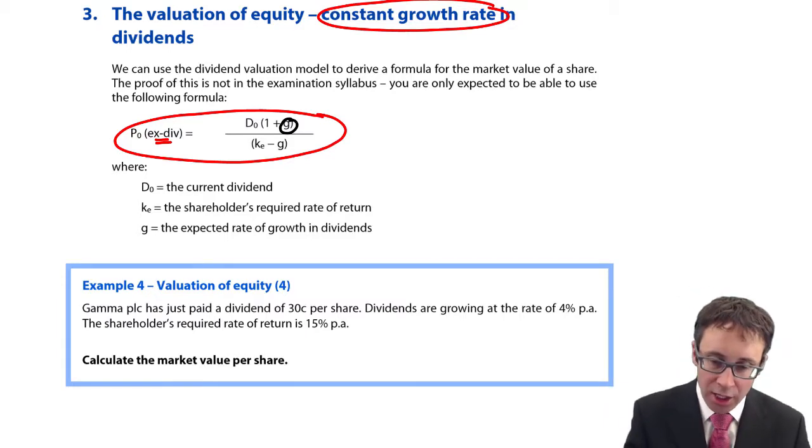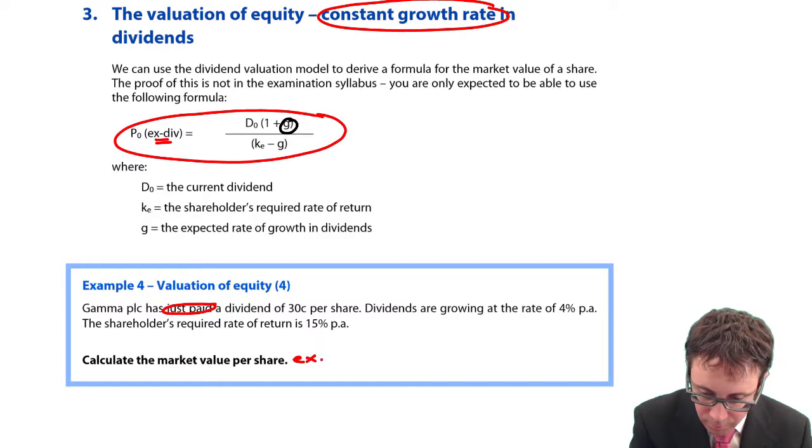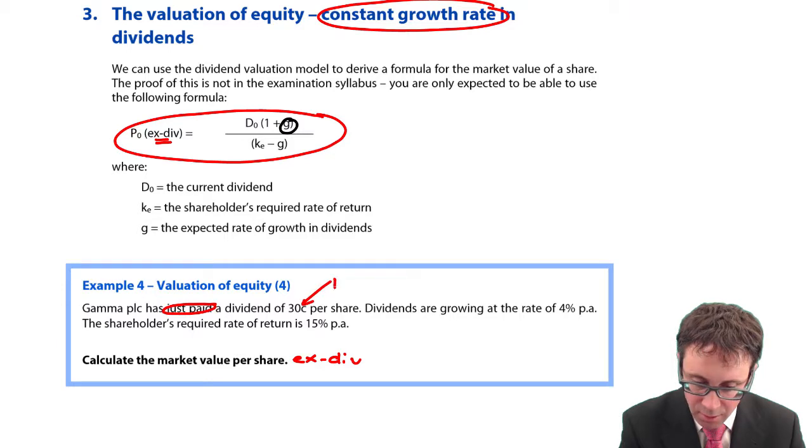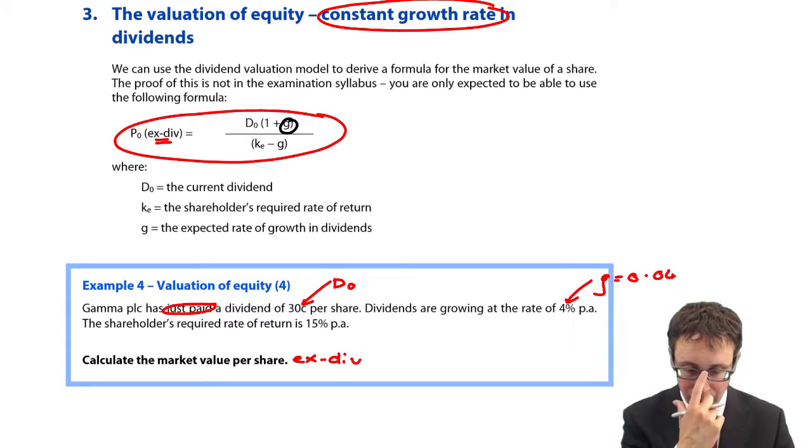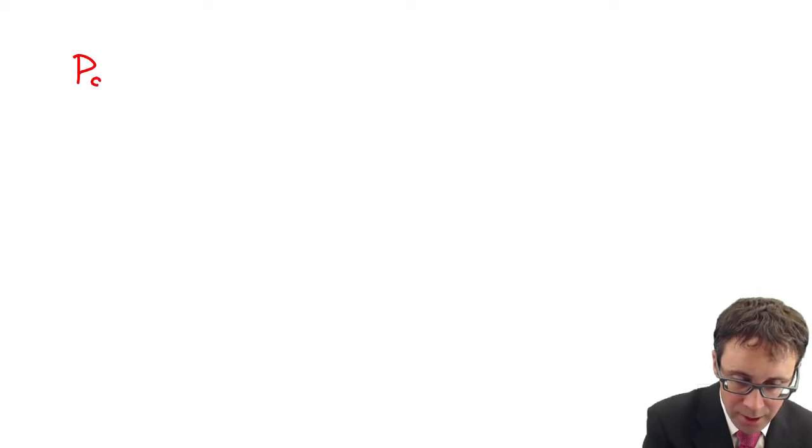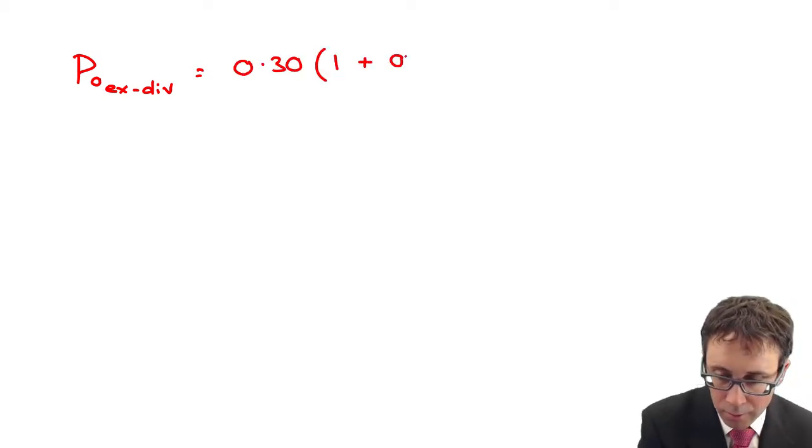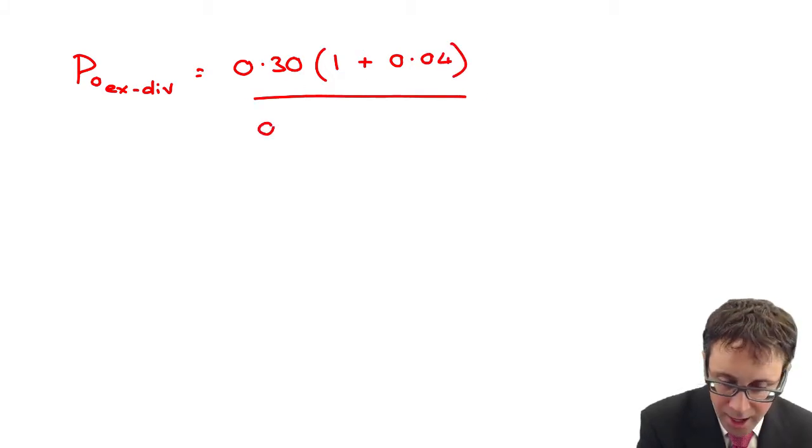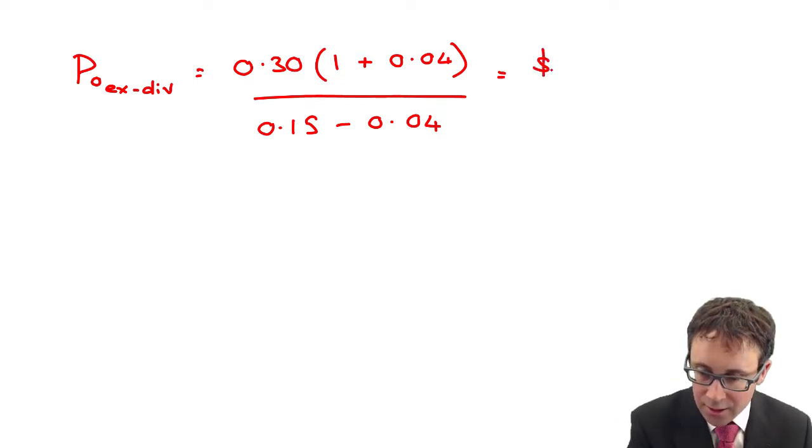It wants us to calculate the market value per share. Well, here, what we have is the fact that we have just paid a dividend. Therefore, the market value per share is going to be ex-div. You've got D0, you've got your growth which is 4%, so remember to decimalise that at 0.04. And then you've got ke at 15%. So what we need to do is work out P0 ex-div. So the dividend there is 0.3 multiplied by 1 plus g, which is 0.04, divided by ke less g. If you tap that into your calculator, you should get $2.84.